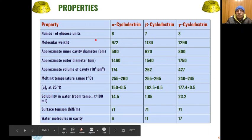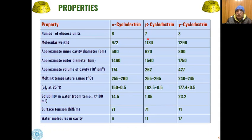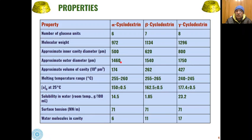Some common properties of alpha, beta, and gamma cyclodextrin: the number of glucose units is 6, 7, and 8 respectively. Molecular weights are 972, 1134, and 1296. The outer diameter also increases as we move from alpha to beta to gamma cyclodextrin, and the volume of the cavity also increases correspondingly.